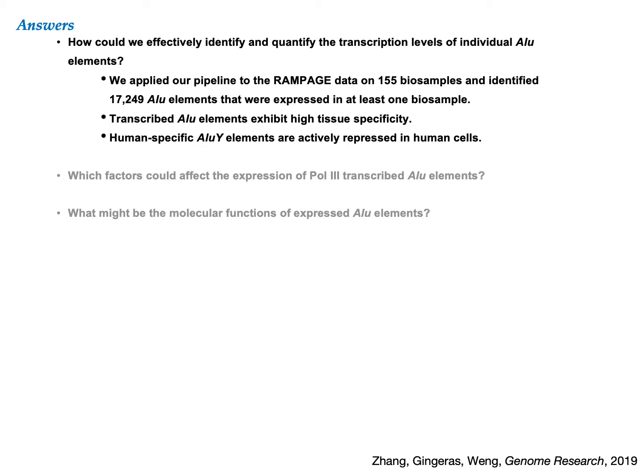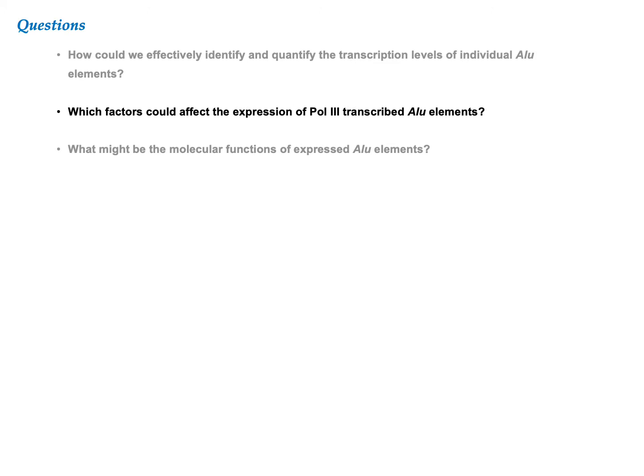In summary, we applied our pipeline to the RAMPAGE data on 155 biosamples and identified 17,000 Alu elements that were expressed in at least one sample. Transcribed Alu elements exhibit high tissue specificity. Human-specific AluY elements are actively repressed. So we moved on to the next question: which factors could affect the expression of Pol III transcribed Alu elements?